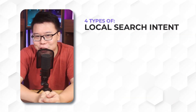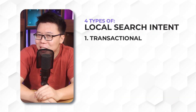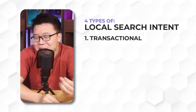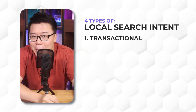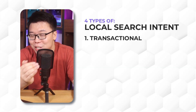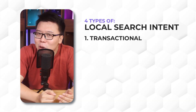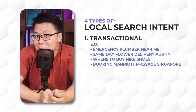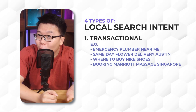There are essentially four types of local search intent. We have transactional search intent keywords, where customers are ready to take action — be it buying a product, visiting a store, or making a booking. Examples would be 'emergency plumber near me' or 'same day flower delivery Austin.'